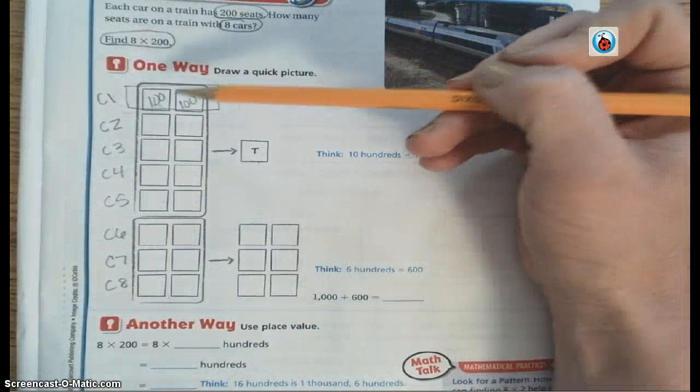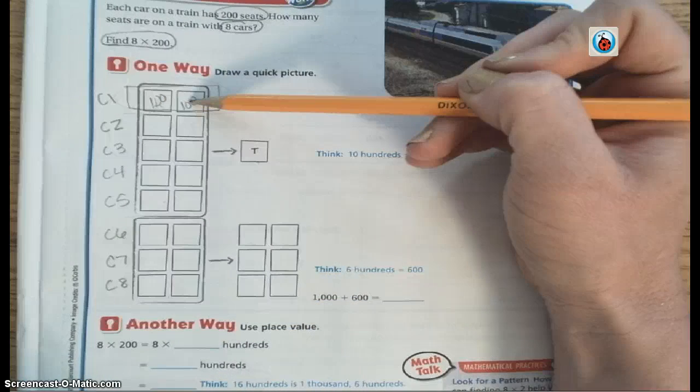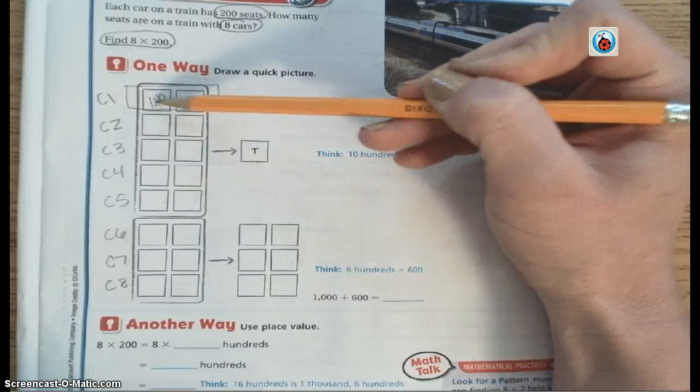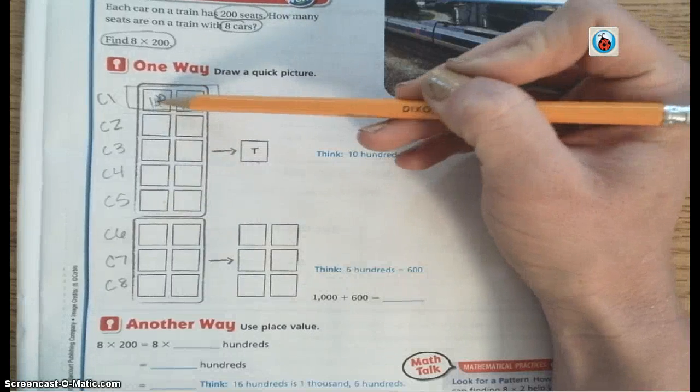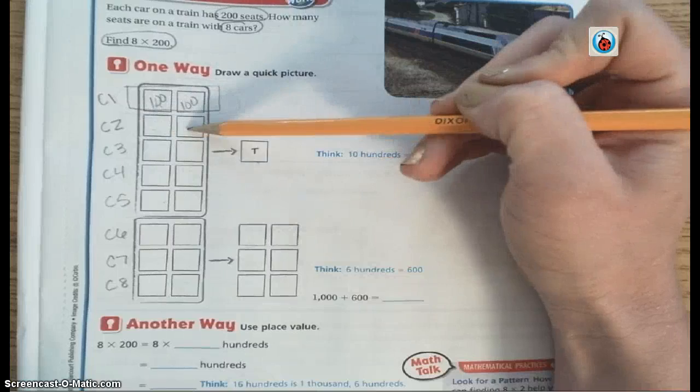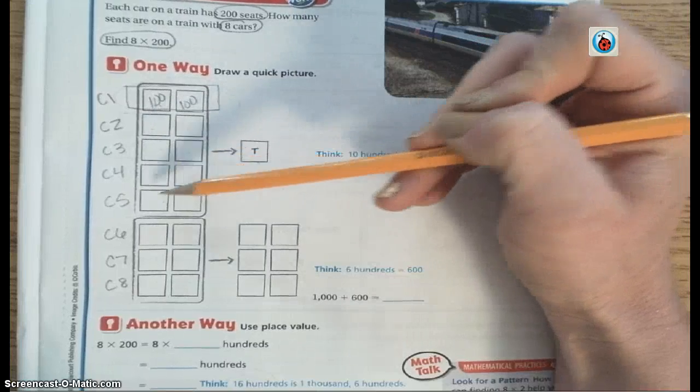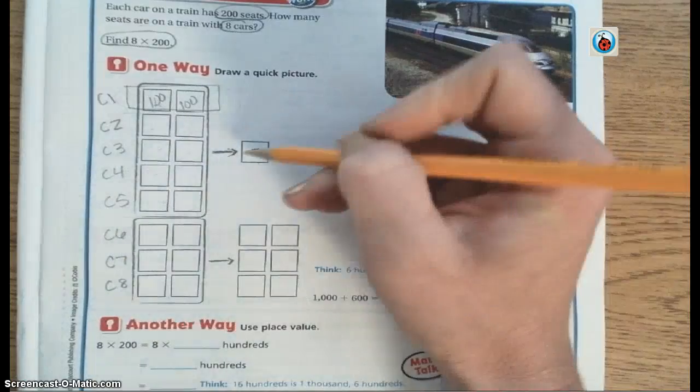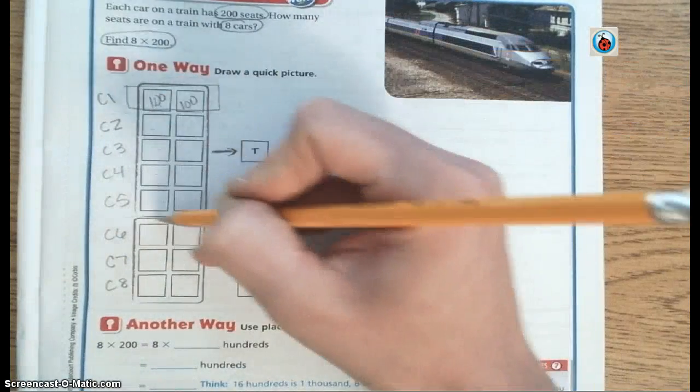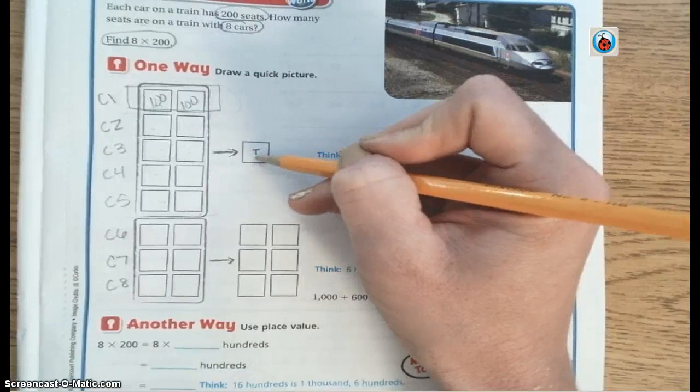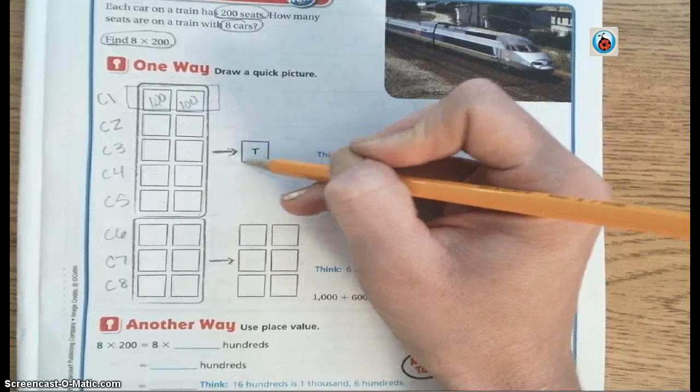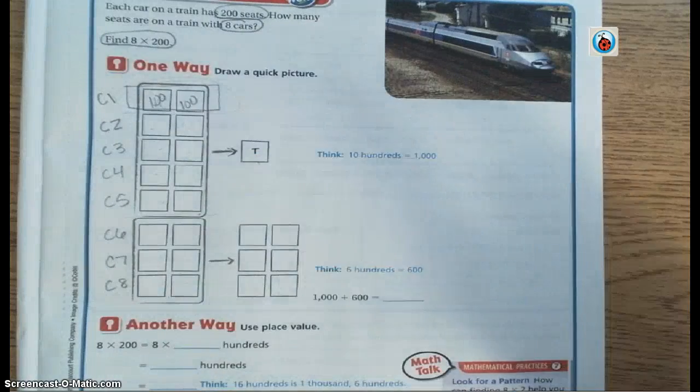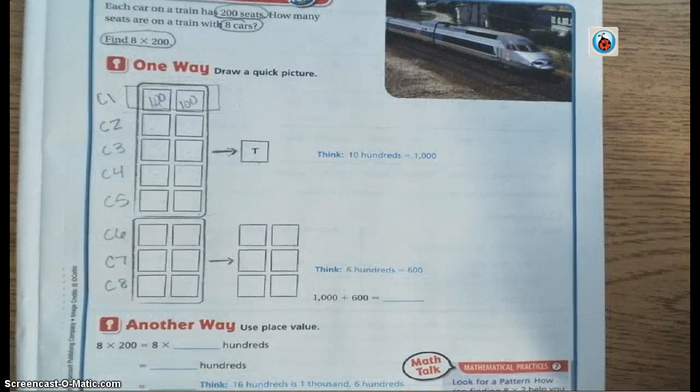It's important to know that each 100, so you would count how many hundreds you have here. You have 200, 400, 600, 800, 1,000. So that's going to transfer over to mean that all of these that they've circled for you is equal to 1,000. And we know that when we have a square with a capital T in it, that represents 1,000.